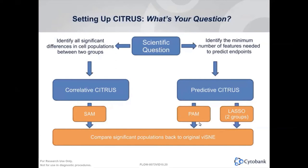There are two models associated with predictive Citrus: PAM and LASSO. LASSO can only run with two groups and has no false discovery rate associated with it. If you are running with more than two groups and false discovery rate is desired, you should run PAM. In Anna's talk later, she used both models. The predictive model was used to identify the minimum number of features necessary to predict HIV positive versus non-infected controls, while the correlative model identified all clusters significantly different between those two groups regarding differential inhibitory receptor expression.